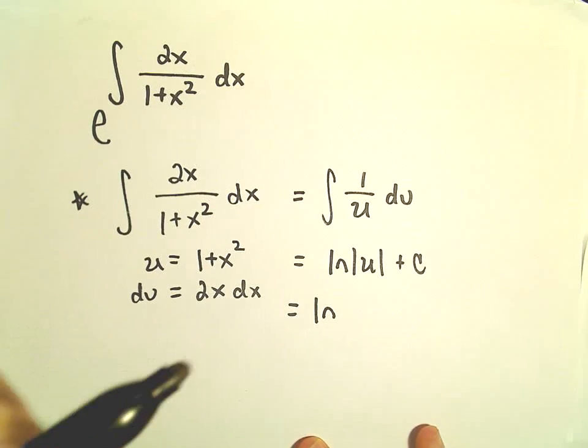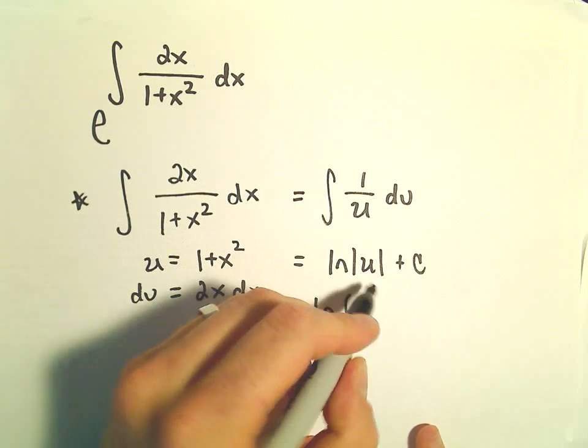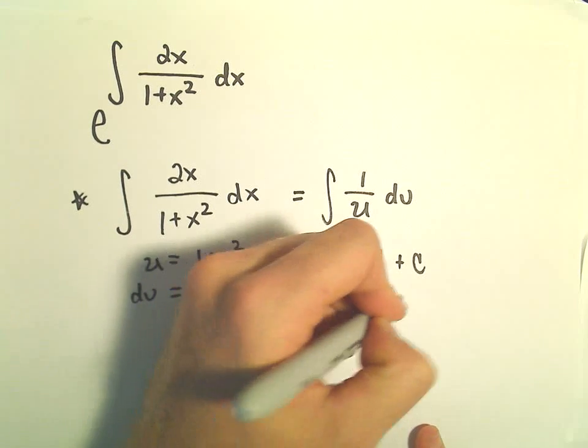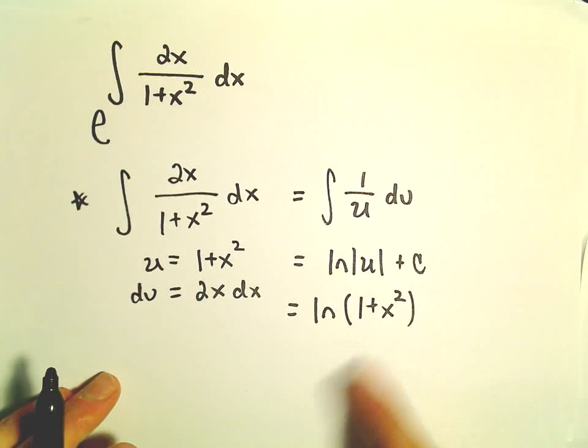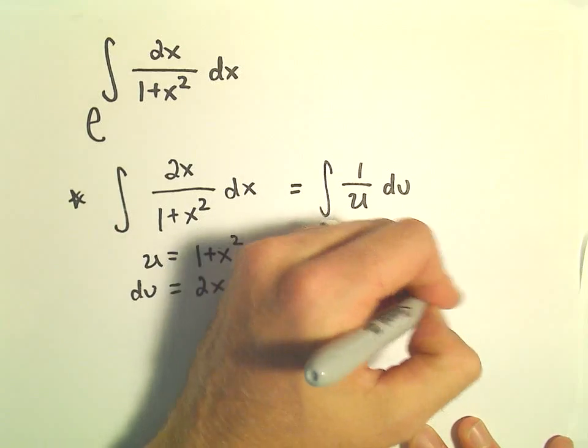So that's going to be the natural logarithm of... We can replace the absolute value with just parentheses. 1 plus x squared is always positive. Plus c.